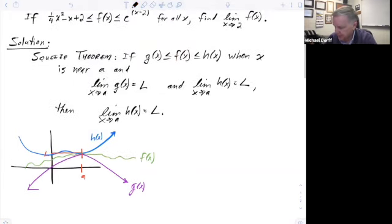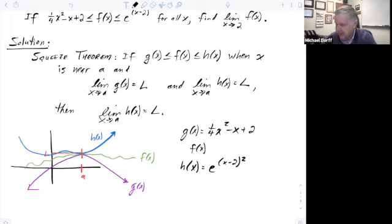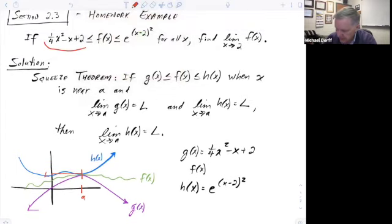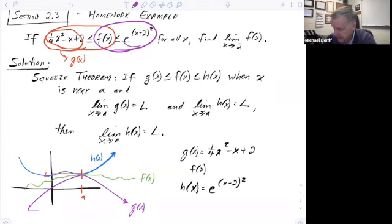So how can we apply that to this particular problem? Well, my function g of x is going to be one-fourth x squared minus x plus two. And then I have my f of x, which I don't know what it is. And then I have my function h, which is e to the x minus two quantity squared. I know that g is always less than or equal to f, so one-fourth x squared minus x plus two is less than f of x — that means this part has to be g of x. Likewise, f of x is less than or equal to e to the x minus two quantity squared, so that part has to be my h.